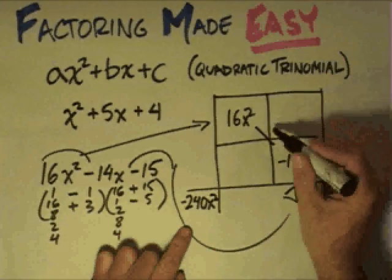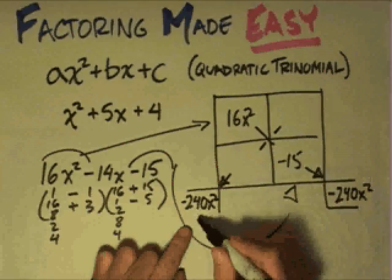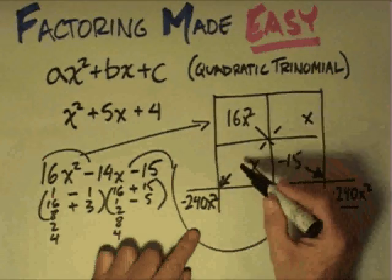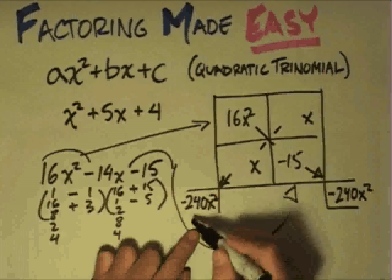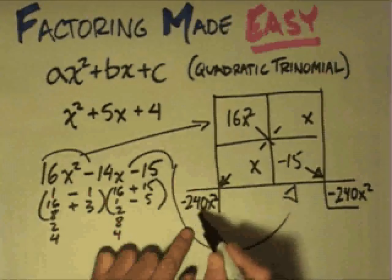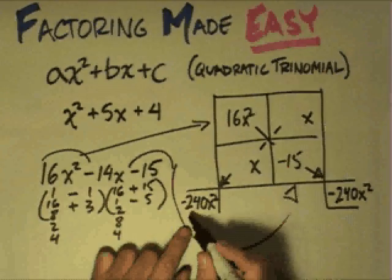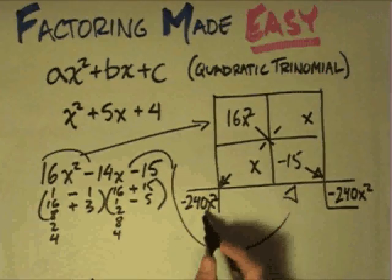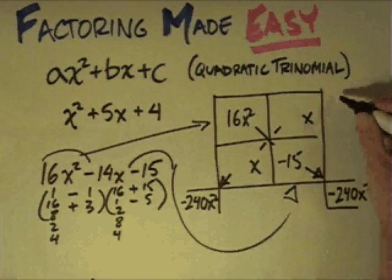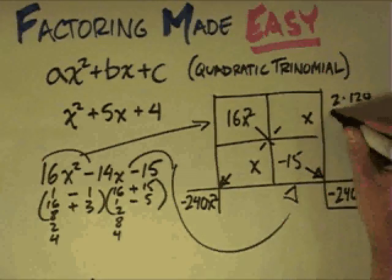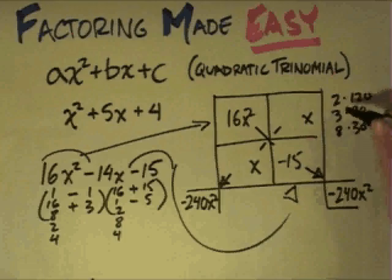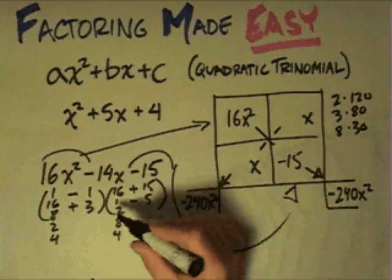Each factor will have an x, and x times x gives me the x squared. So I need two numbers that multiply to make negative 240, and those two numbers have a difference of 14. I start listing factor pairs of 240: it's definitely not 1 and 240. It could be 2 and 120, or 3 and 80. I try 8 and 30 — but their difference is 22, not 14. These have a difference of 77, so that's not it either. Going in this direction — toward closer factor pairs — is the right approach.